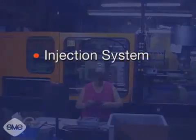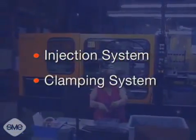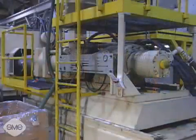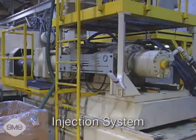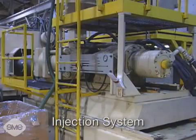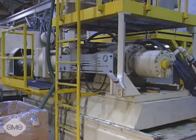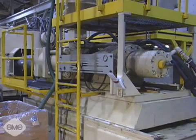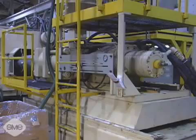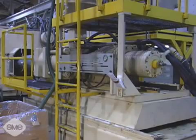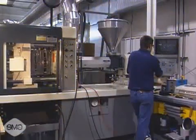An injection system and a clamping system. The injection system heats the thermoplastic material to its appropriate viscosity or flowability and then forcefully injects it into the mold. There are two types of injection mechanisms: the reciprocating screw, which is the most common, and the two-stage screw.